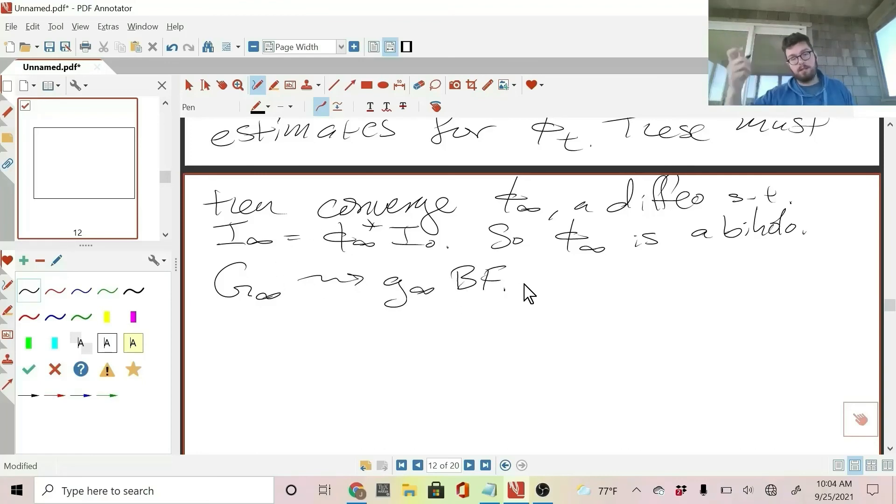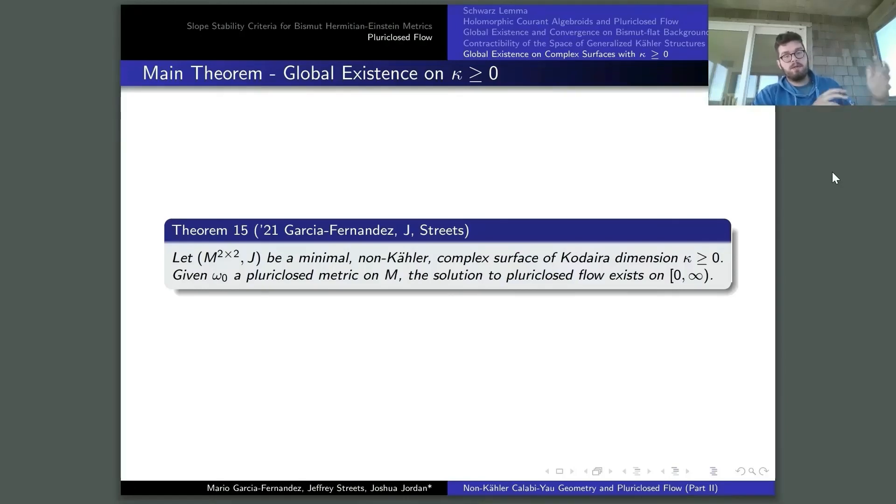So this is the contractibility of the space of generalized Kahler structures which we mentioned. All right, it's one of the ones I think is most interesting. So M4j, we want that to be a minimal non-Kahler complex hypersurface of non-negative Kodaira dimension. Then, if we put a pluriclosed metric on that, the solution to pluriclosed flow exists on zero to infinity. This is a little technical because it involves some machinery going through principal torus bundles, because all of these kinds of manifolds are covered by principal torus bundles. And you really just have to do the analysis there, apply the a priori estimates carefully, and you get the result.